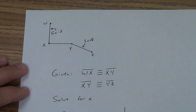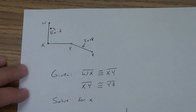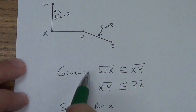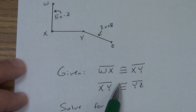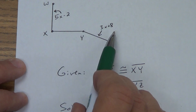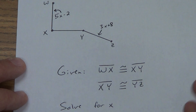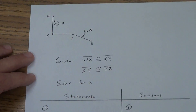One more proof. This one doesn't have a 'prove' — it just says solve for X. We've got W, X, Y, and Z. That's 5X minus 2 and 3X plus 8 — those are in the picture, so they're givens. We're going to solve for X — that's like my 'prove': prove X equals some number. Get that copied down, pause if you need to — I'm going to get started here as soon as I zoom out.